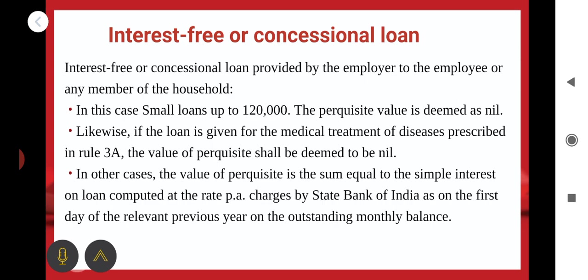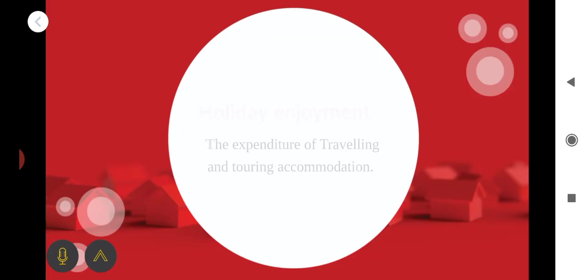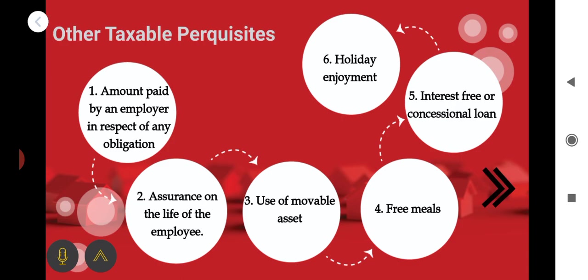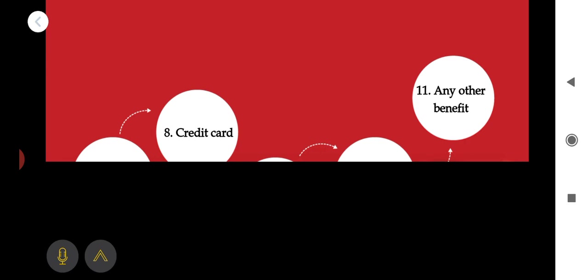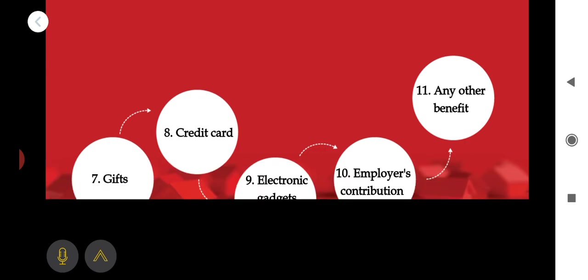The next one is holiday enjoyment: amounts provided by the employer to the employee for traveling and touring accommodation — that is expenditure incurred for touring and traveling. Many other perquisites are available in our textbooks; go through the textbooks. Some important ones we will discuss here.